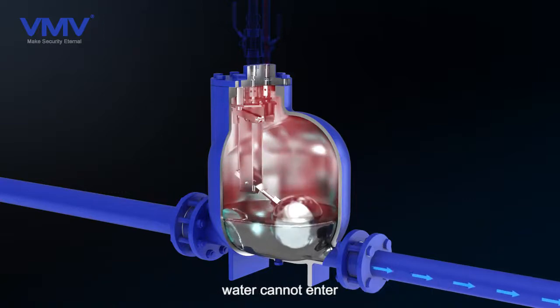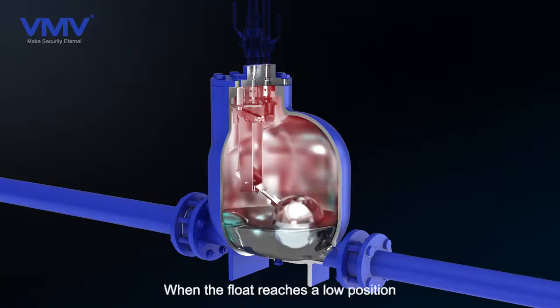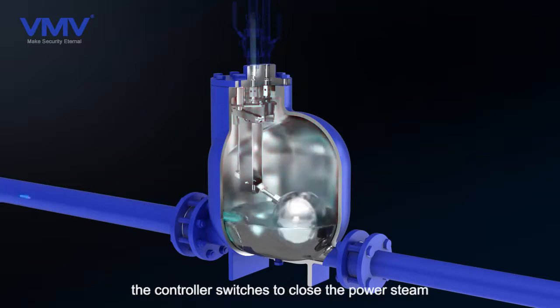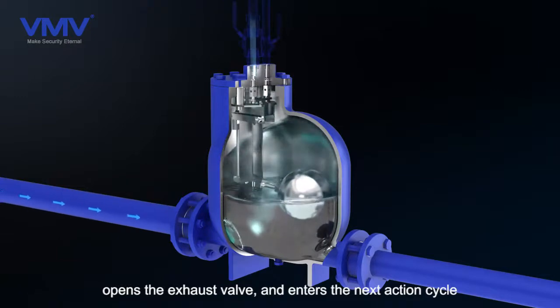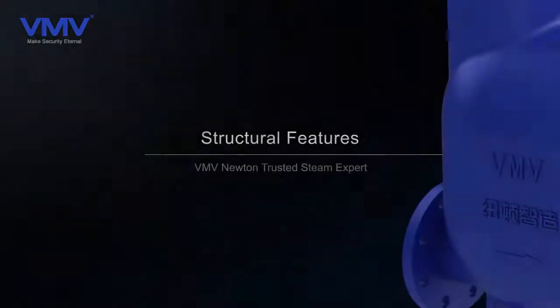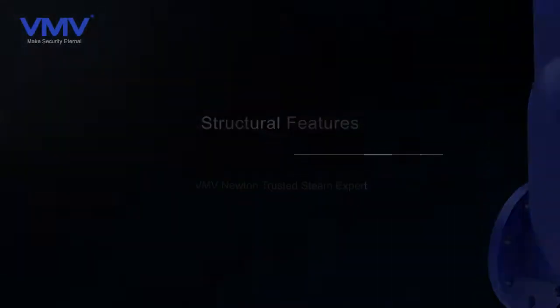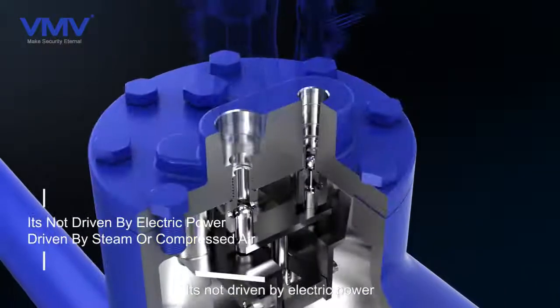Then the inlet check valve closes due to the high pressure inside the valve, and water cannot enter. When the float reaches a low position, the controller switches to close the power steam, opens the exhaust valve, and enters the next action cycle.